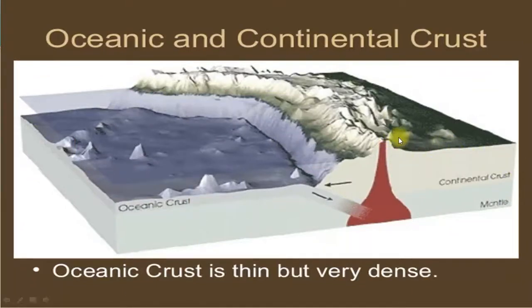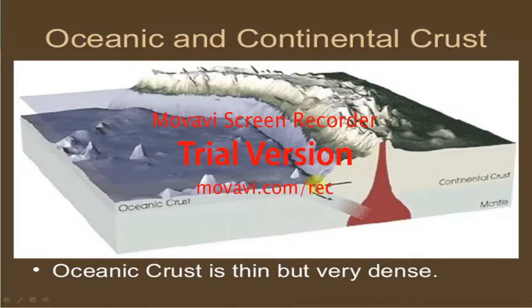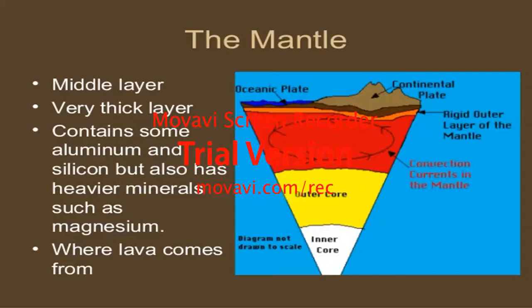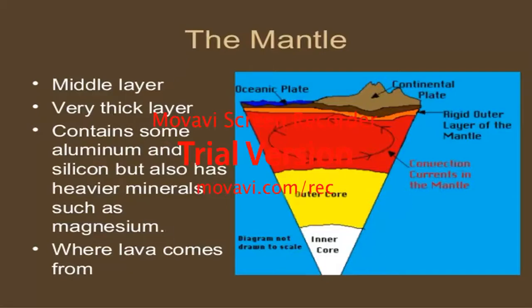The crust is a bit more dense in the oceanic regions. The mantle is the middle, thick area beneath the crust. It contains aluminum and silica, but also heavy minerals. The key mineral in the mantle is magnesium.